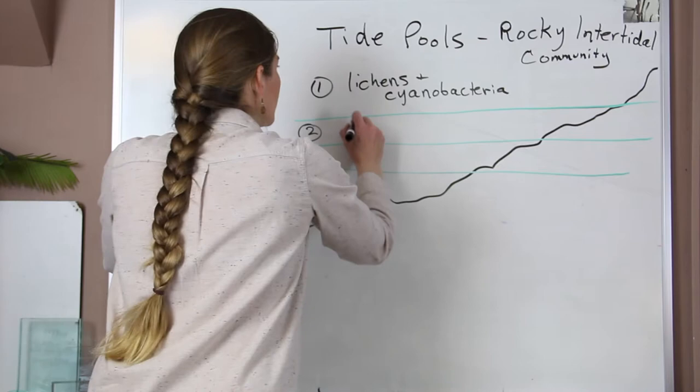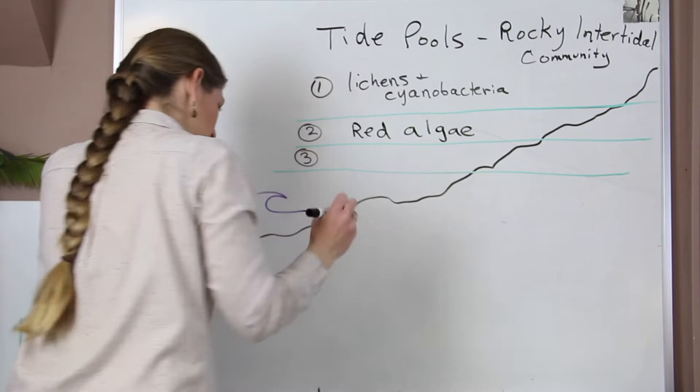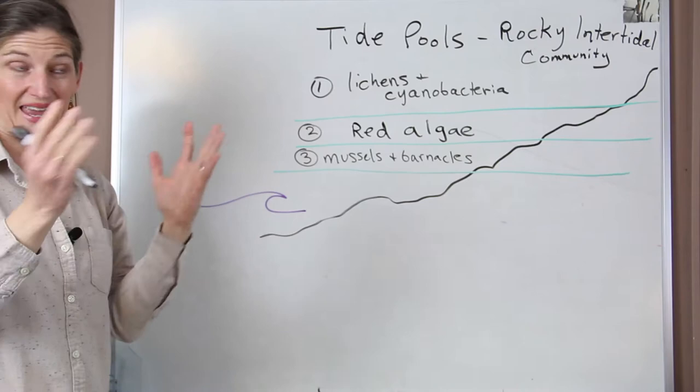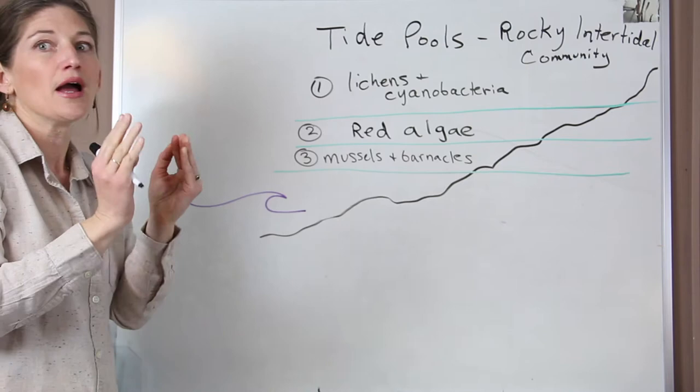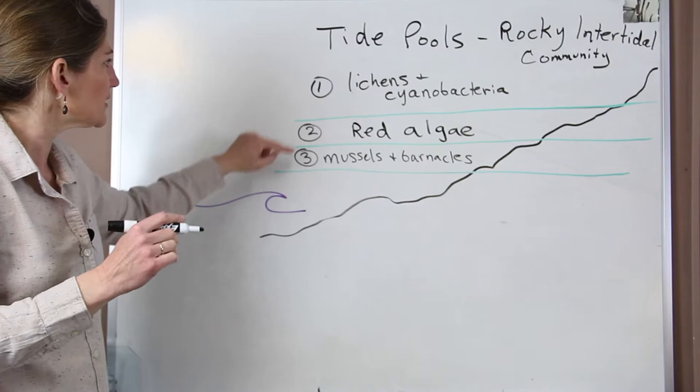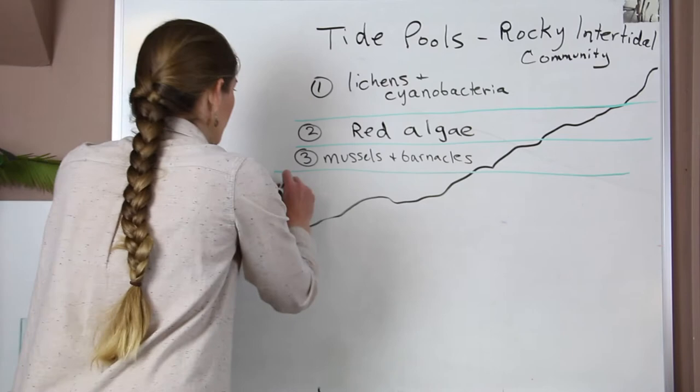In the second zone, just down a little bit, we find a lot of red algae. In the third zone, we're going to start to see our mussels and barnacles. These organisms can handle some exposure — they have shells, they're able to close up and seal up, but they do have limits for how long they can be exposed. They are sessile, attached to the rocks. They're in a zone that has more moisture than the zone above.